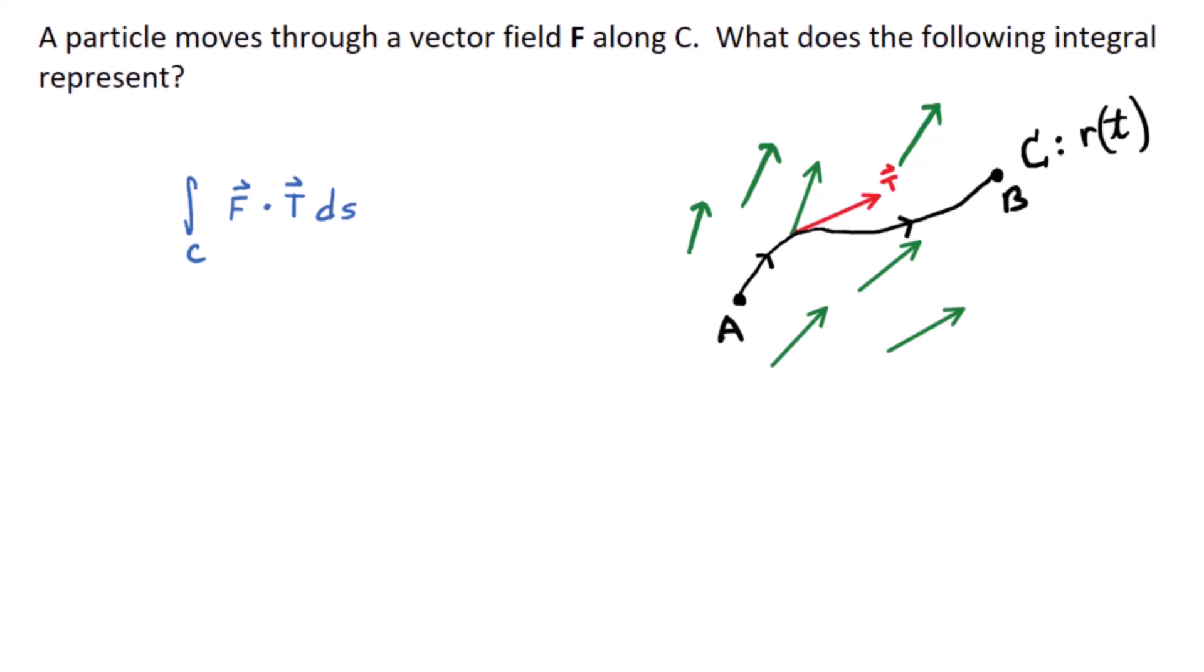A particle moves through a vector field F. It could be a force field. You've heard that term in science fiction. Force fields are real. Science fiction gets all its cool terms from physics and math. A force field is a real thing. So imagine the length of each vector representing a force. It could be a force in newtons or pounds or something. A particle moves through a vector field, a force field F, along a path C. Think of C as the path that it travels.